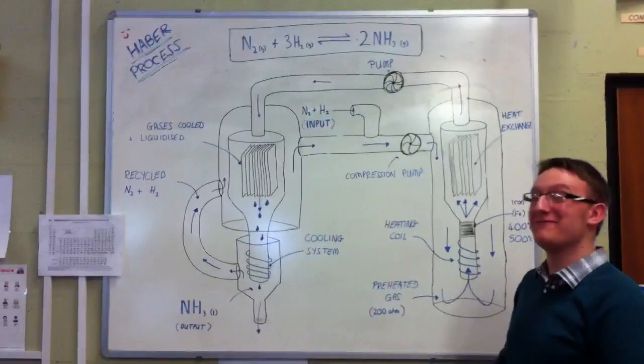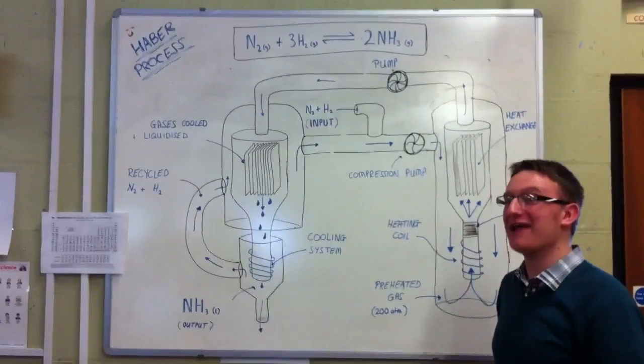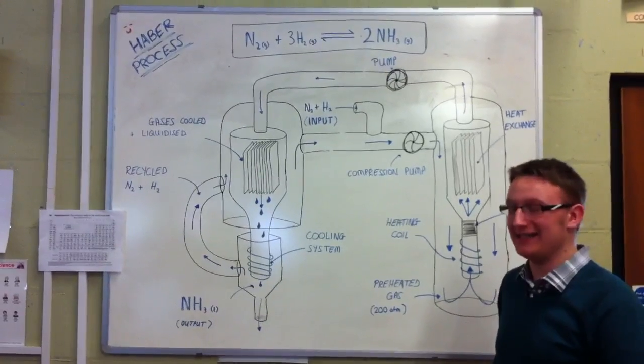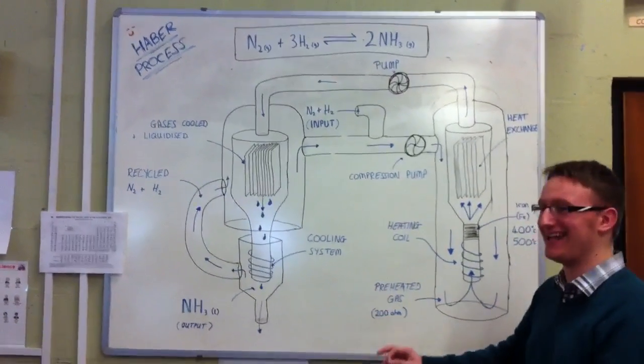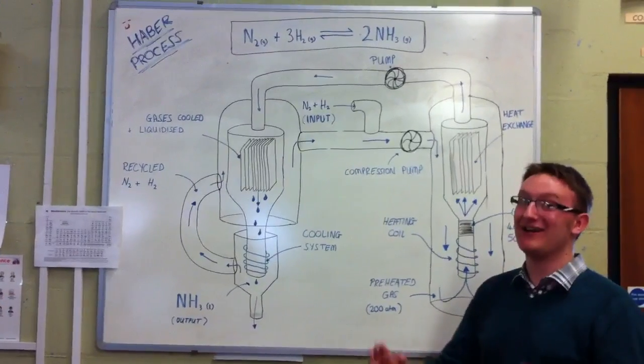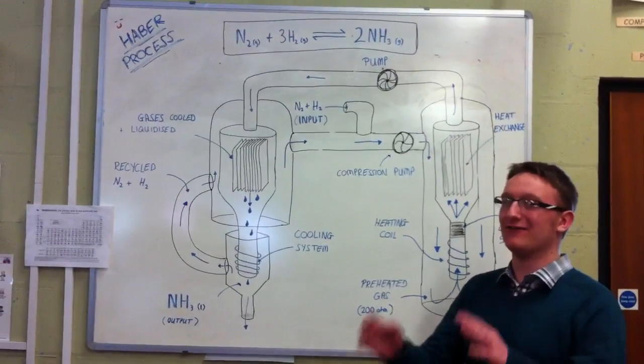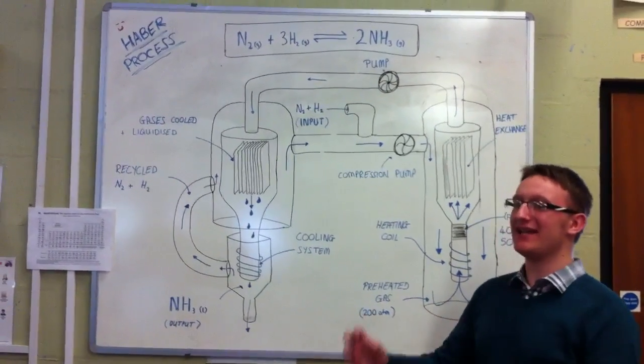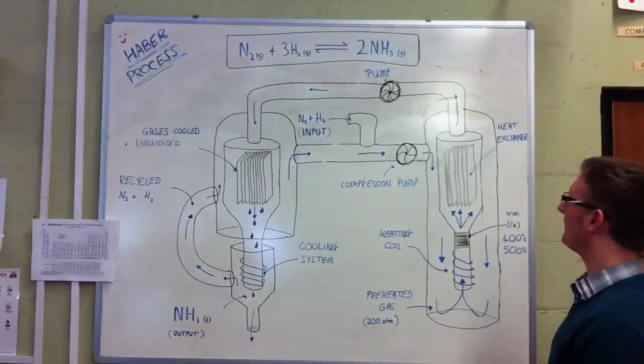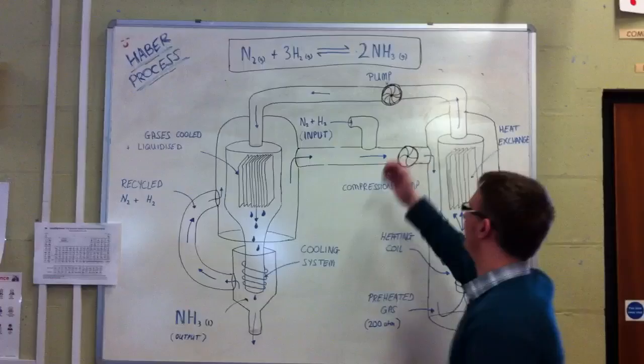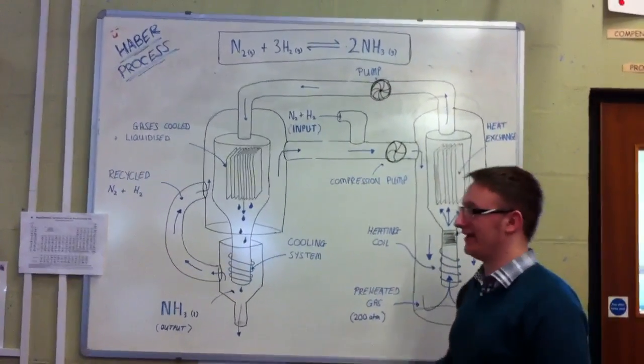To get the maximum yield in the Haber Process, high pressure pushes the equilibrium towards the right. This happens because the reactants take up more space than the product. There's four moles to start with going to two moles. So the increased pressure has more effect and pushes the whole process to the right, forming more ammonia.